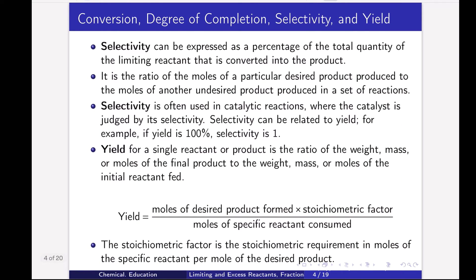Next is selectivity. Selectivity can be expressed as the percentage of the total quantity of the limiting reactant that is converted into the product. It is the ratio of the moles of a particular desired product produced to the moles of another undesired product produced in a set of reactions. Selectivity is often used in a catalytic reaction — the catalyst is judged by its selectivity. Selectivity can be related to yield; for example, if yield is 100%, selectivity is 1.